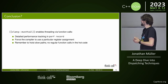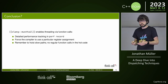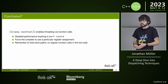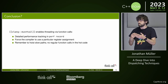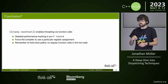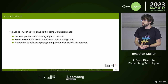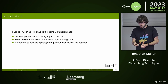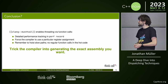So clang::musttail enables threading via function calls. You can use clang::musttail, get detailed performance records with perf record, and force the compiler to use a particular register assignment — which is really cool. But you must not have any function calls inside the tail-call function, otherwise performance goes out the window. Move them somewhere else and remember you cannot actually return. With clang::musttail, you can tweak the compiler into generating exactly the assembly you want.